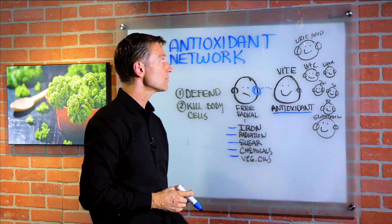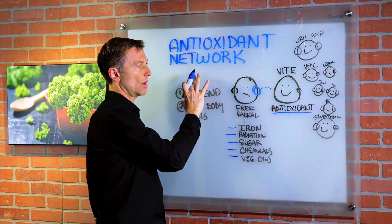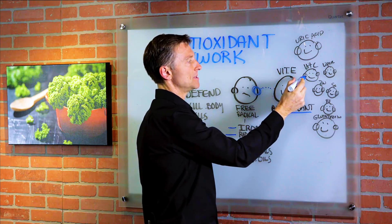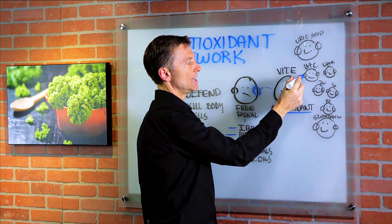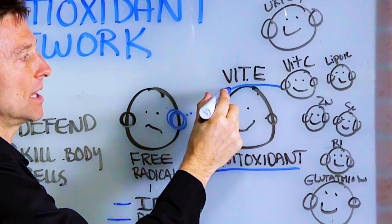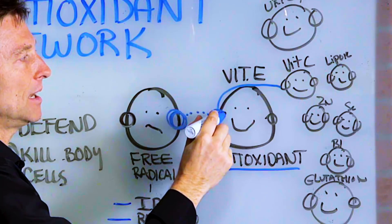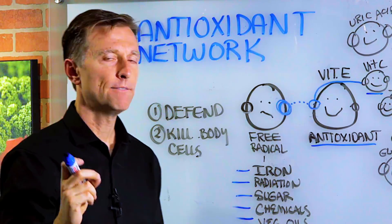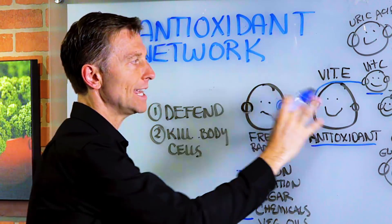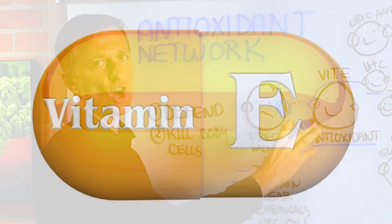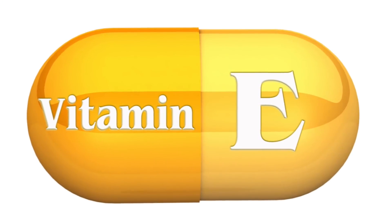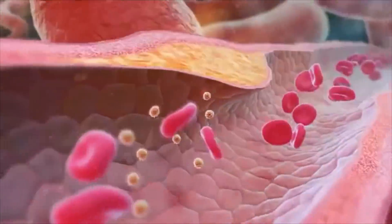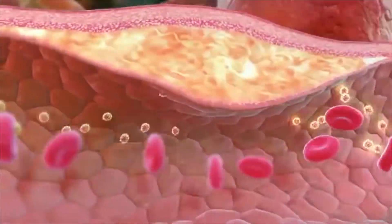That's why we have a network — many different antioxidants. For example, vitamin C would then donate one of its electrons to vitamin E, so vitamin C really helps vitamin E stay in there and do its work a lot longer. Vitamin E is really important in keeping the inside of the arteries healthy.